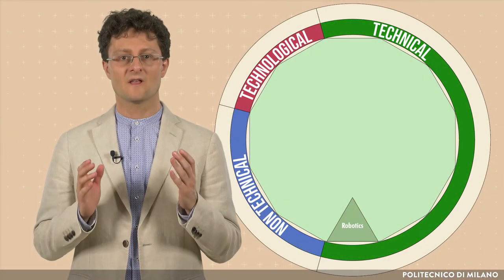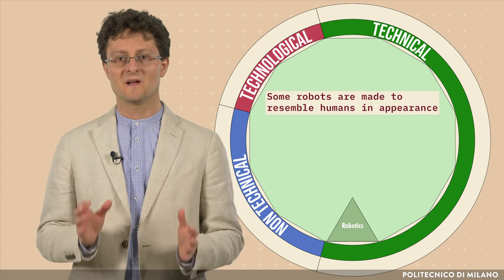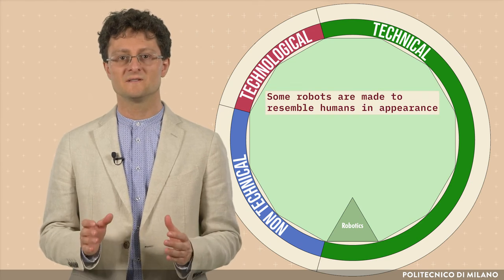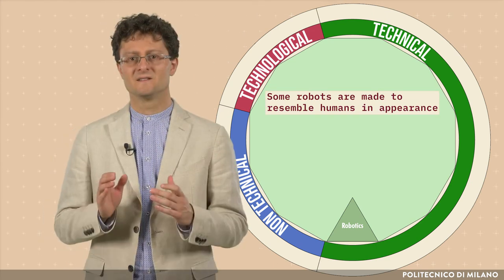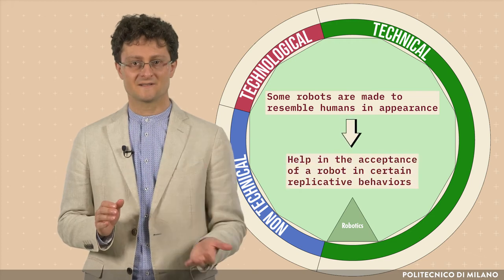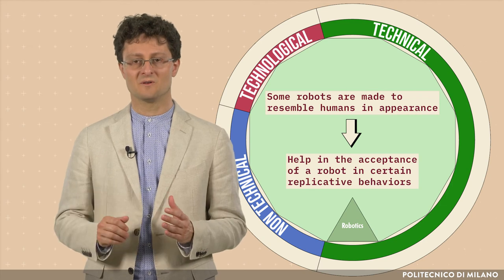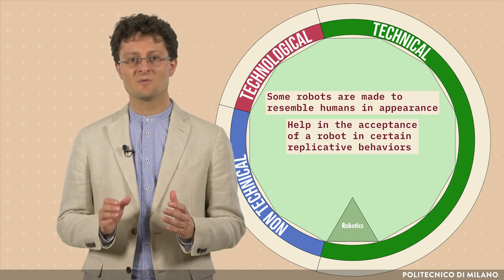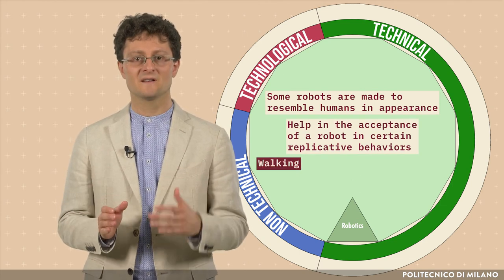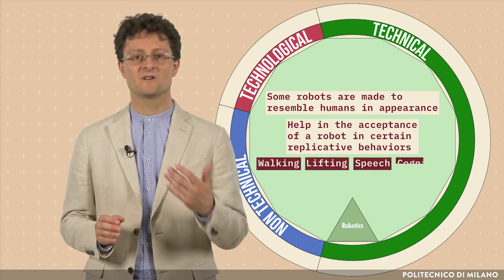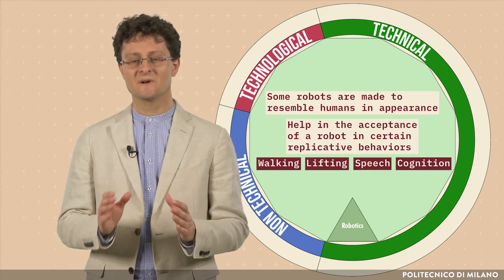Robots can take on any form, but some are made to resemble humans in appearance. This is said to help in the acceptance of a robot in certain replicative behaviors usually performed by people. Such robots attempt to replicate walking, lifting, speech, cognition and any other human activity.